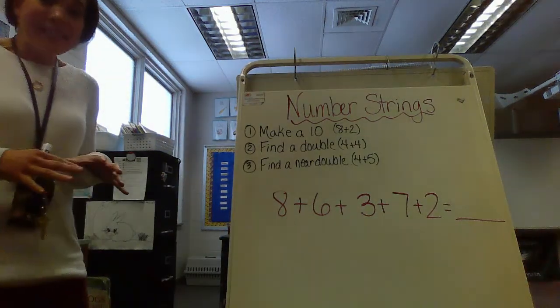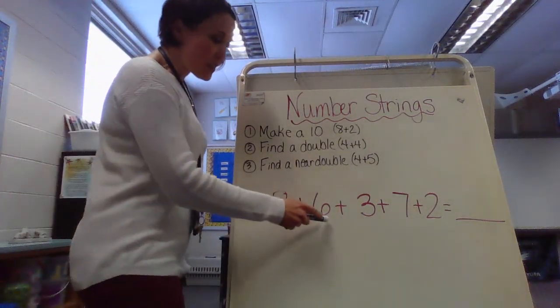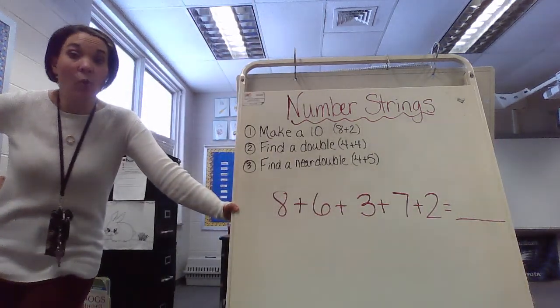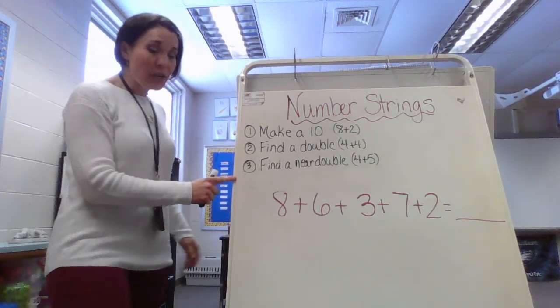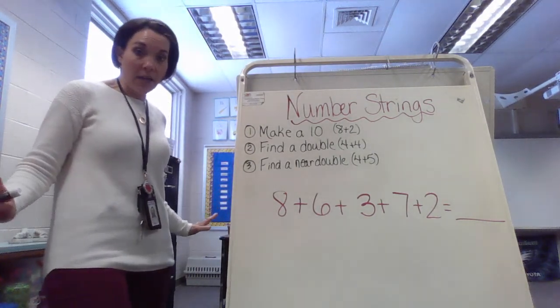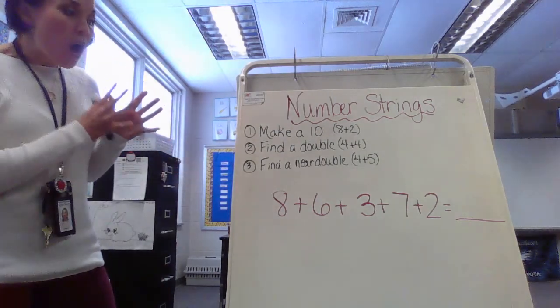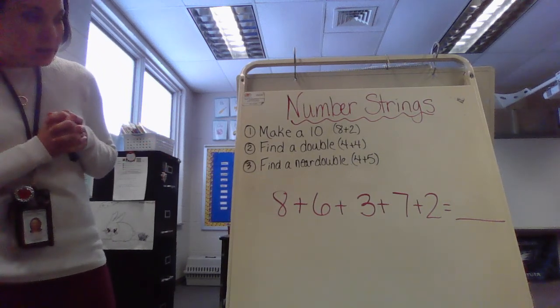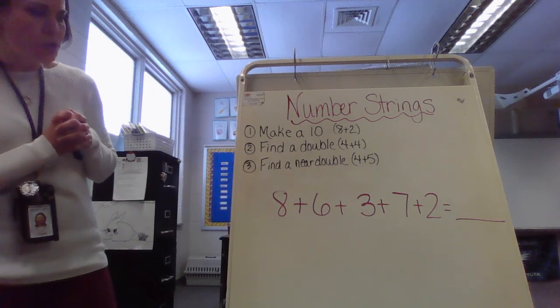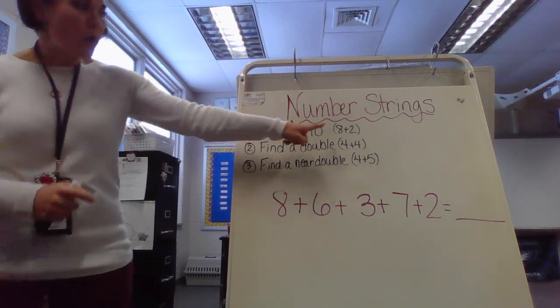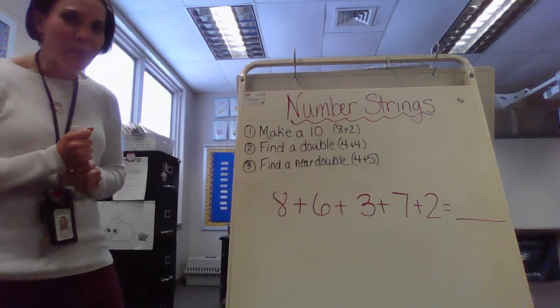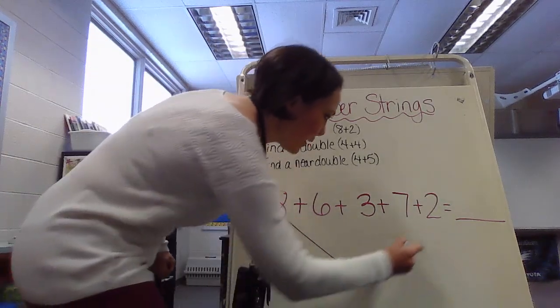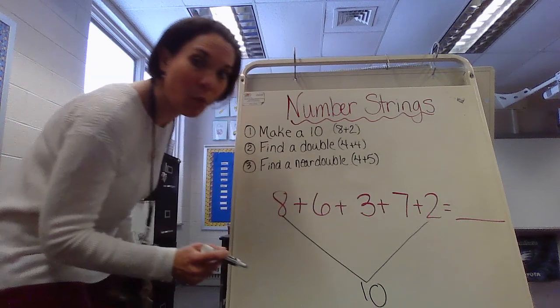Okay folks, we have one that's even longer this time. I have 8 plus 6 plus 3 plus 7 plus 2. So how about that? That's quite a big one. But if we follow these strategies, we'll be totally fine. So let's see, let's take a look. Are there ways that maybe we could make 10? So let's take a look and see what we have: 8, 6, 3, 7, 2. If you look at what my clue was here for make a 10, my example was 8 plus 2. So if you see this, we have an 8 and a 2. So there is one way to make 10. All right.